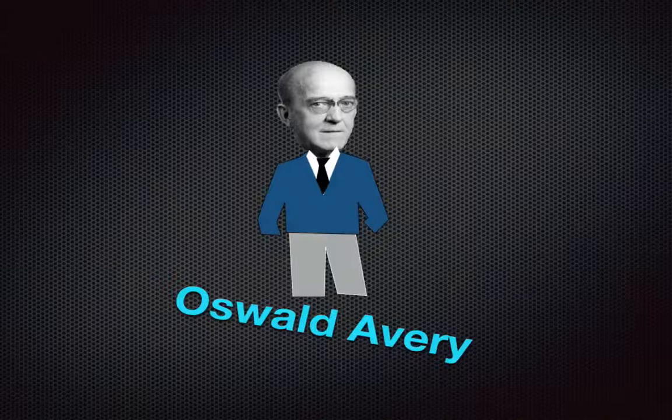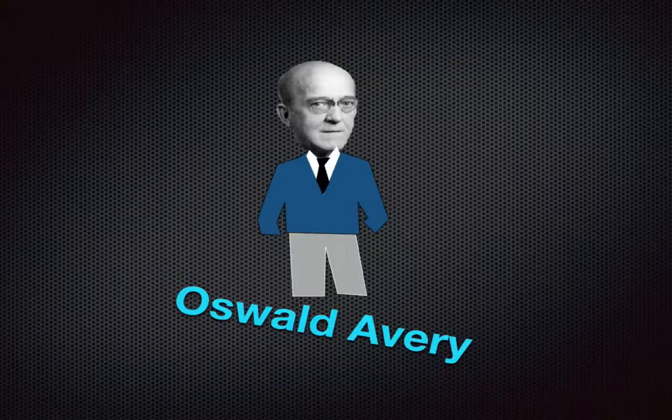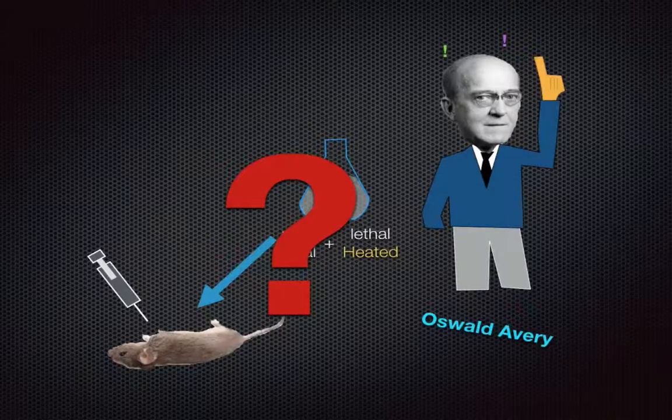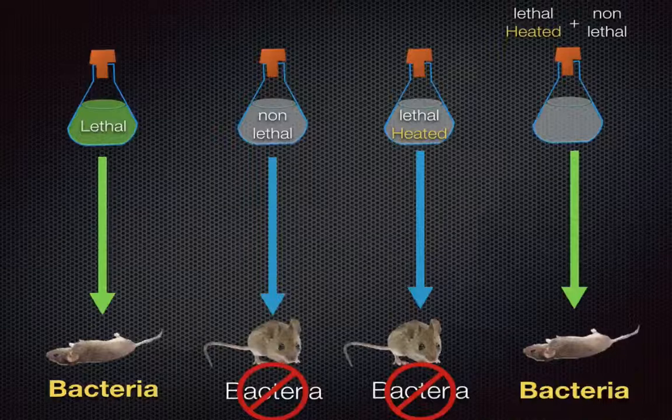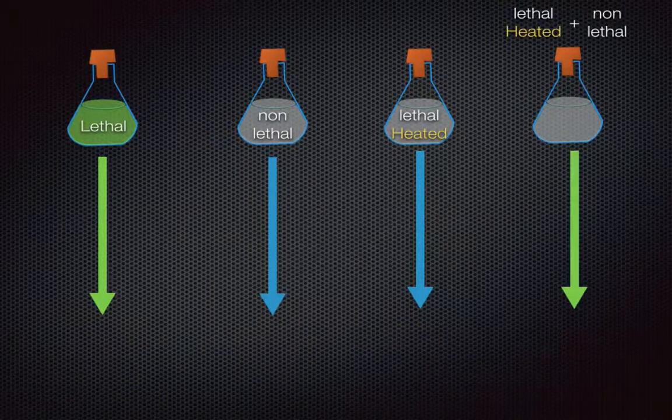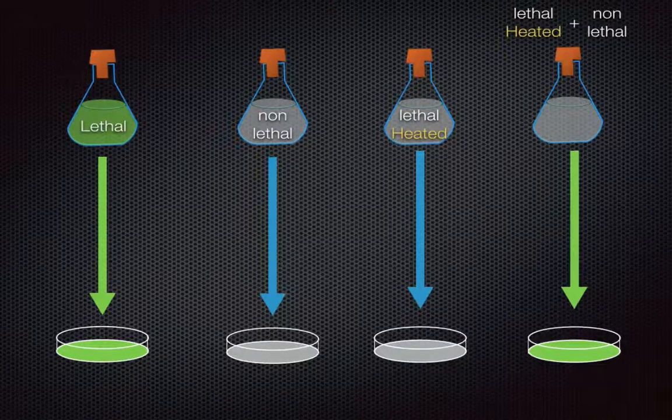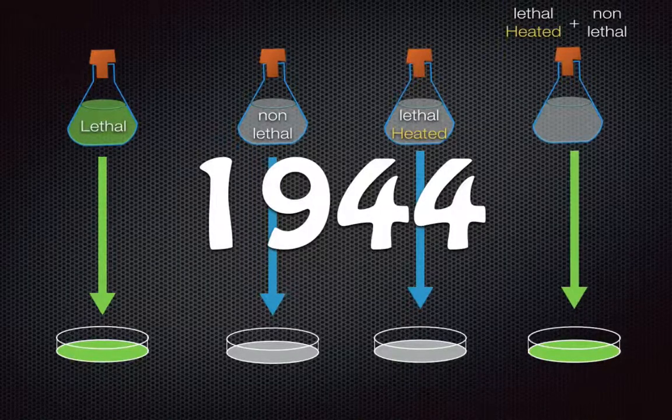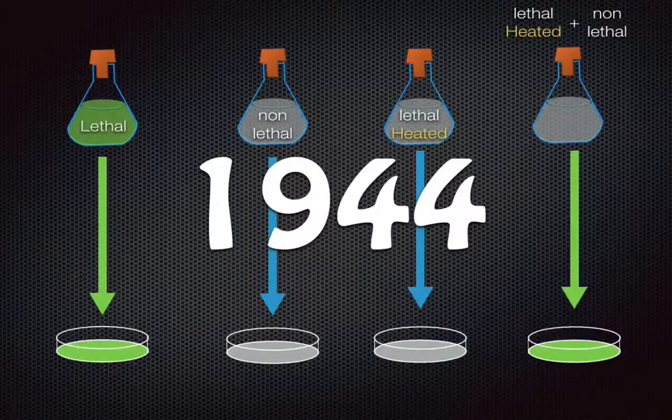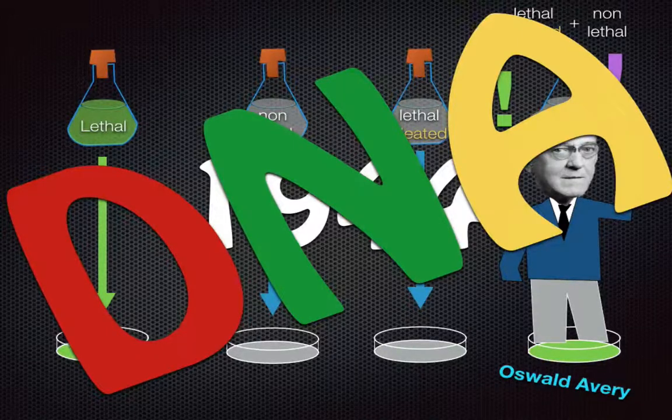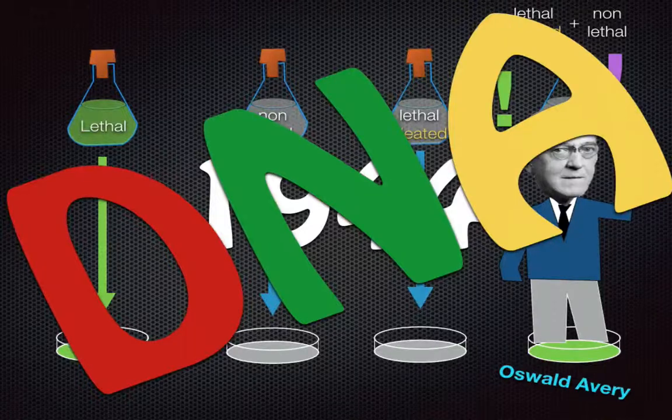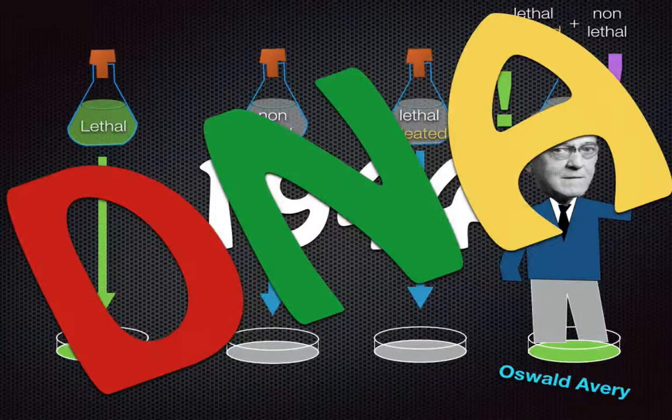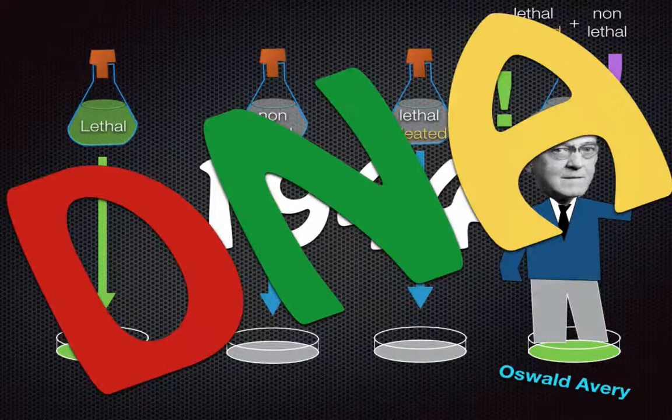Along comes another scientist called Oswald Avery. He took the experiments from Griffith and was also baffled. He did the same experiment, except he took the mice out and just mixed the bacteria. In 1944, he published a paper and definitively concluded that it was DNA that was causing the transformation. The non-lethal bacteria that was living was able to absorb the DNA of the dead lethal bacteria, thus transforming it into lethal bacteria.